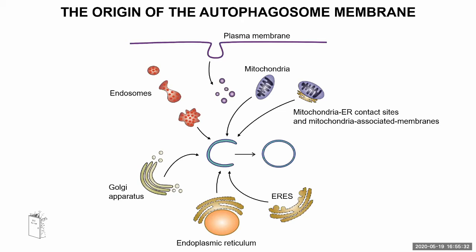When I started my project many years ago, it was mostly about mitochondria, the endoplasmic reticulum, and the plasma membrane. But as research has progressed and technologies have advanced, we now also talk about mitochondria-ER contact sites, mitochondria-associated membranes, the endosomal pathway, the Golgi, the ER exit sites, and so on.